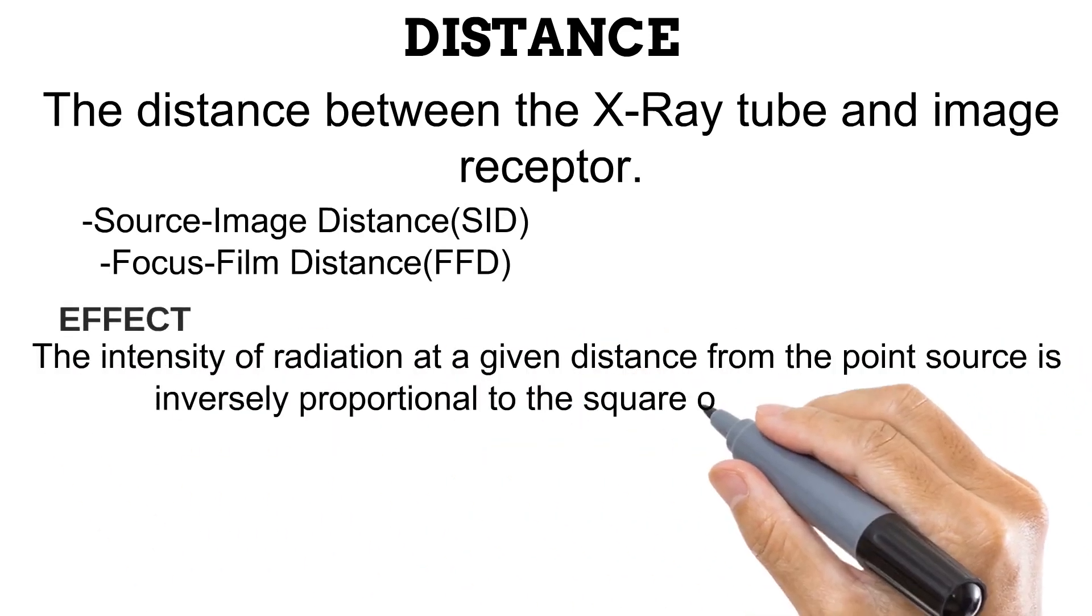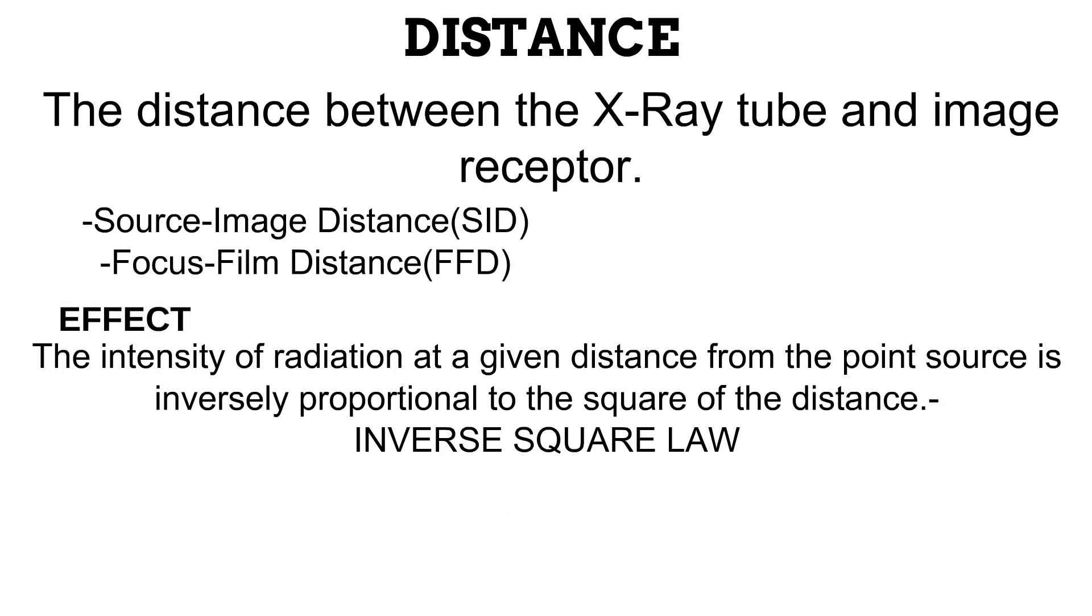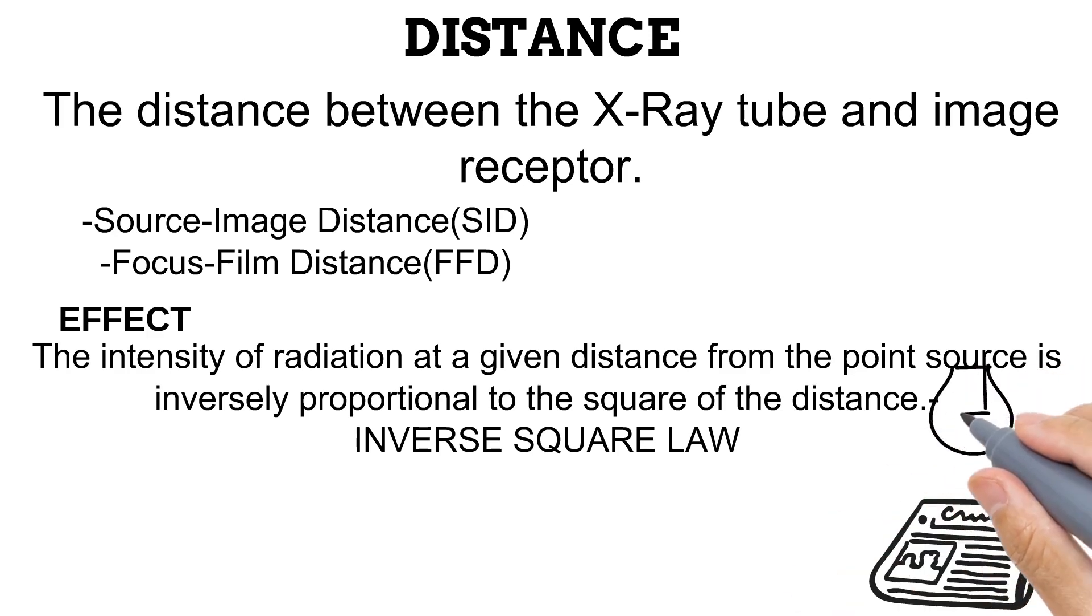The effect of distance on the radiograph is summed up in a statement known as the inverse square law. This states that the intensity of radiation or photons at a given distance from the point source is inversely proportional to the square of the distance from the source. Think of it this way: you're in a room with just one light bulb, and you're trying to read a newspaper. You would observe that the closer the light bulb is to the newspaper, the brighter, more intense light that shines on the newspaper. But as distance increases between the light bulb and the paper, a lower intensity of light is observed on the newspaper. This is similar to the effect that distance has on radiographic image quality. We would be going into more detail on this in the next video.